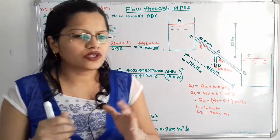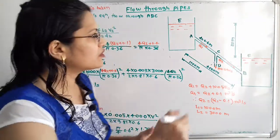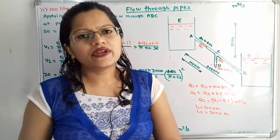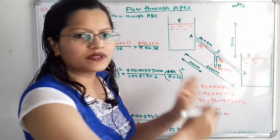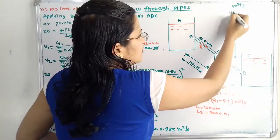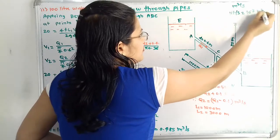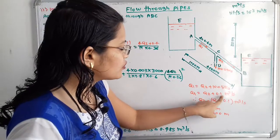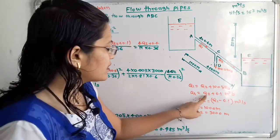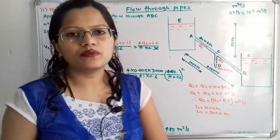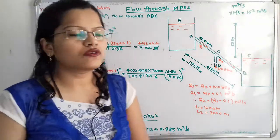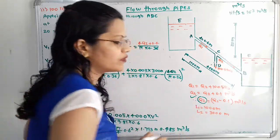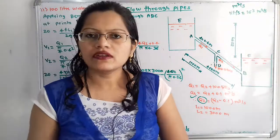Since discharge is in m³/s, we convert 100 liters per second: 100 L/s = 0.1 m³/s. By continuity at point C: Q1 = Q2 + 0.1 m³/s, therefore Q2 = Q1 − 0.1 m³/s. We need to find Q2, which is the discharge to the lower reservoir.